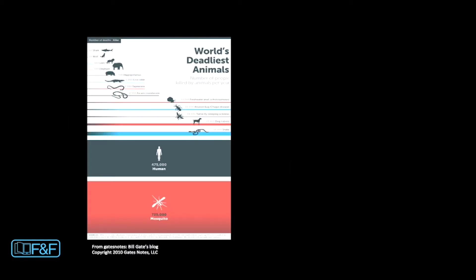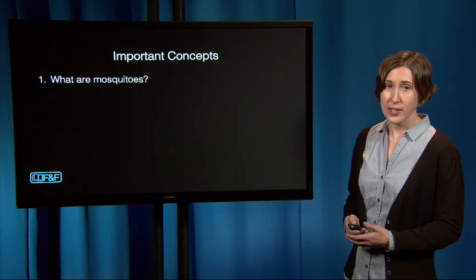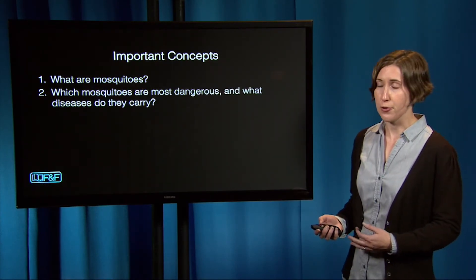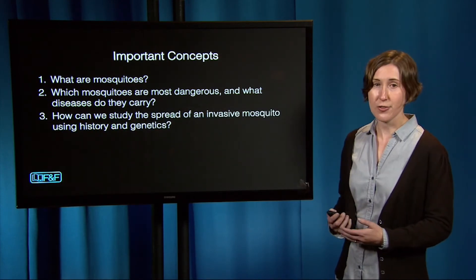Mosquitoes really are a dangerous group of animals. More than half of the global population is at risk of infection with a mosquito-borne disease, and billions of people throughout time have died of malaria. Some people think that maybe half of all people who ever lived died of malaria, but that's pretty hard to prove. In my talk today, I'm going to give an introduction to mosquitoes, go over which mosquitoes are most dangerous and what diseases they carry, and finally how we can study the spread of an invasive mosquito using history and genetics.